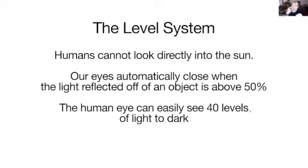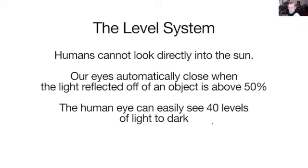Think about if you walk out in the snow — a lot of times you have to wear sunglasses when skiing because the reflection of the sun is so bright it blinds you. The human eye can easily see 40 different levels of light to dark. If black is 8% of light reflected and we can see about 40 levels, there are about four levels within each major level. So you've got 10 levels of color and four individual minor levels in between — therefore you can see 40 levels of light to dark.